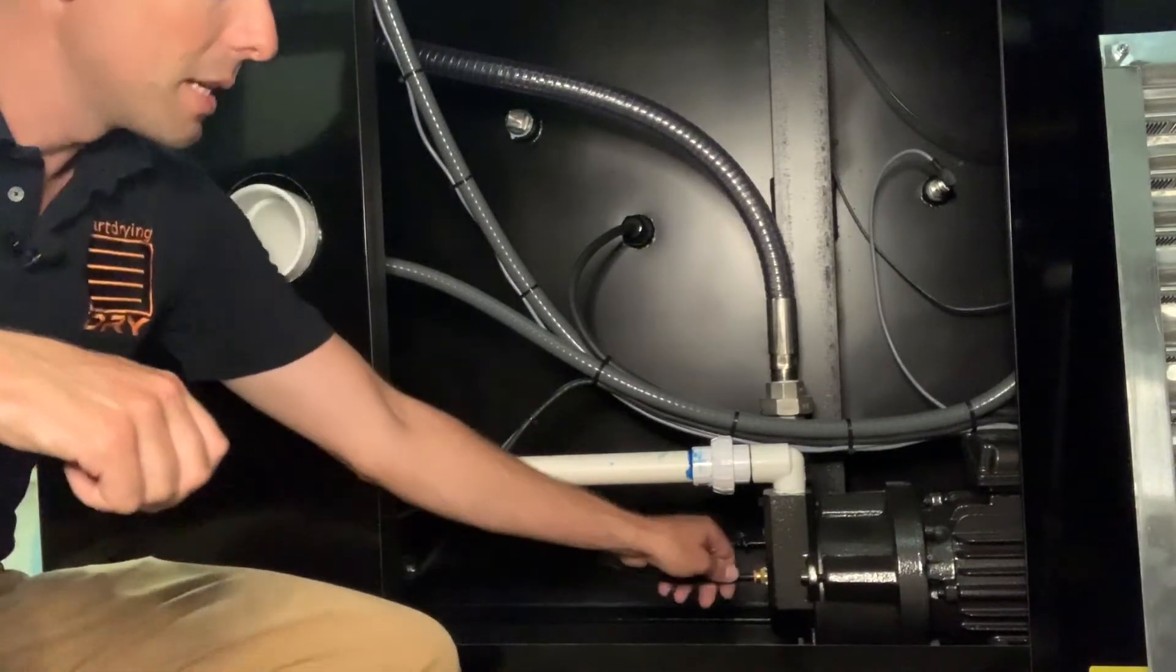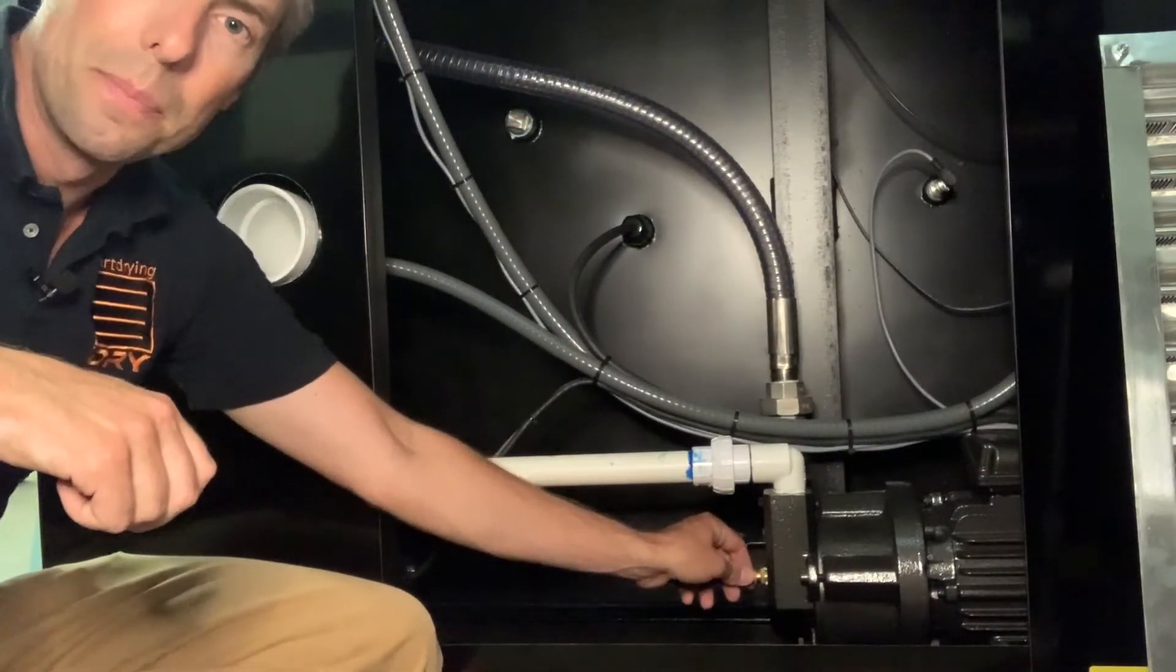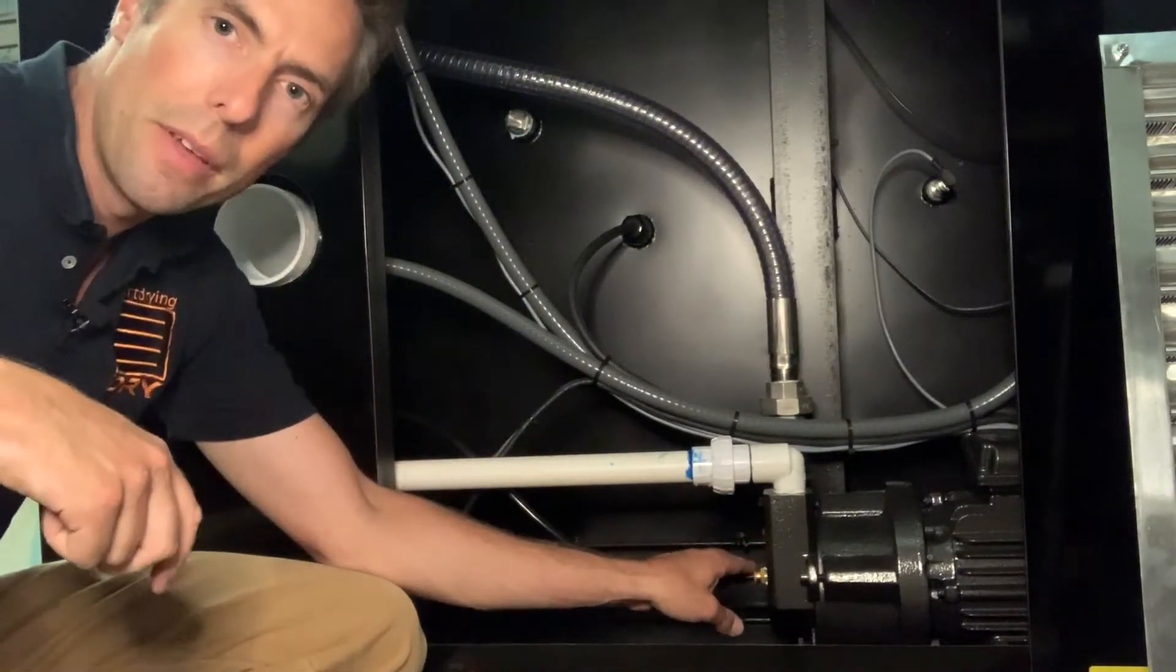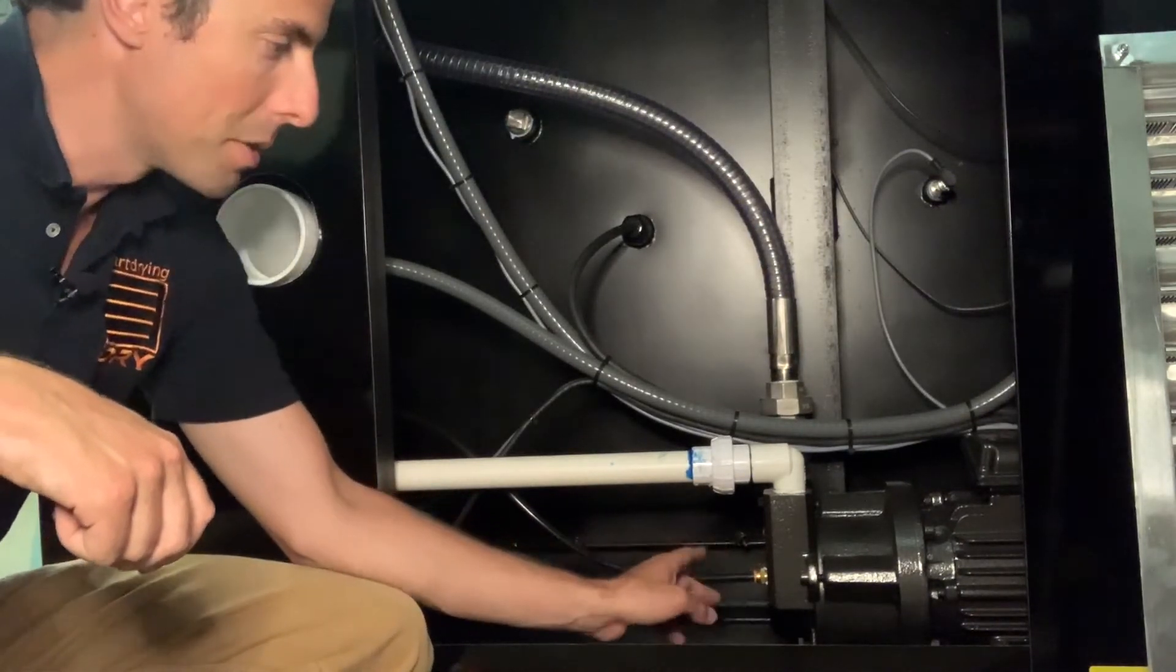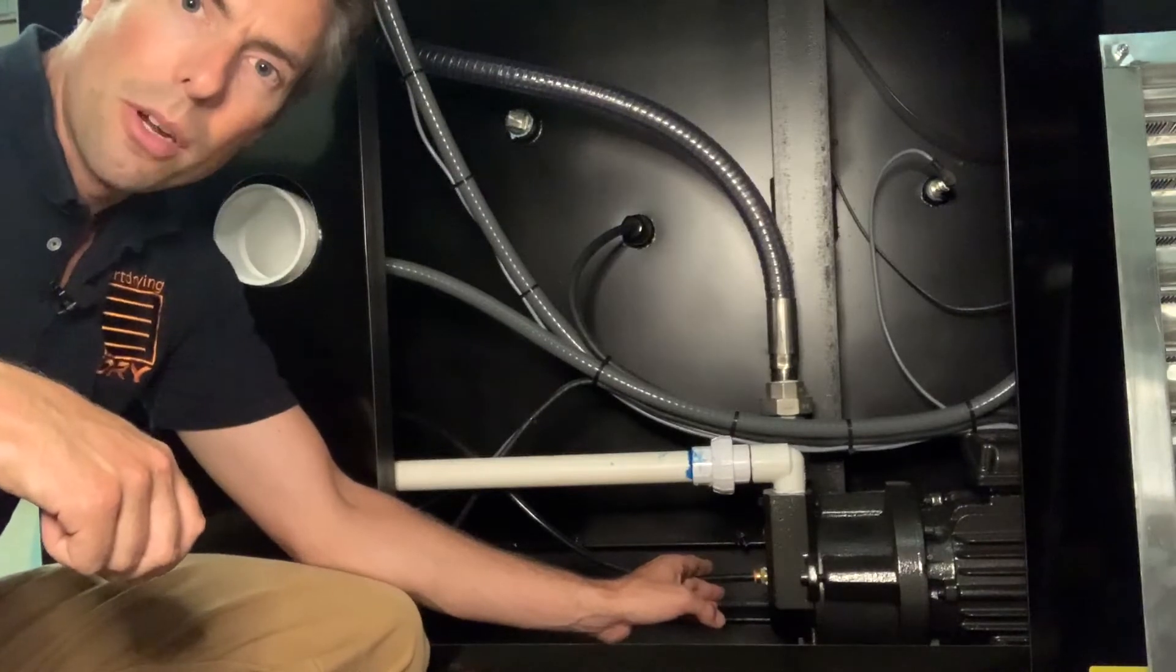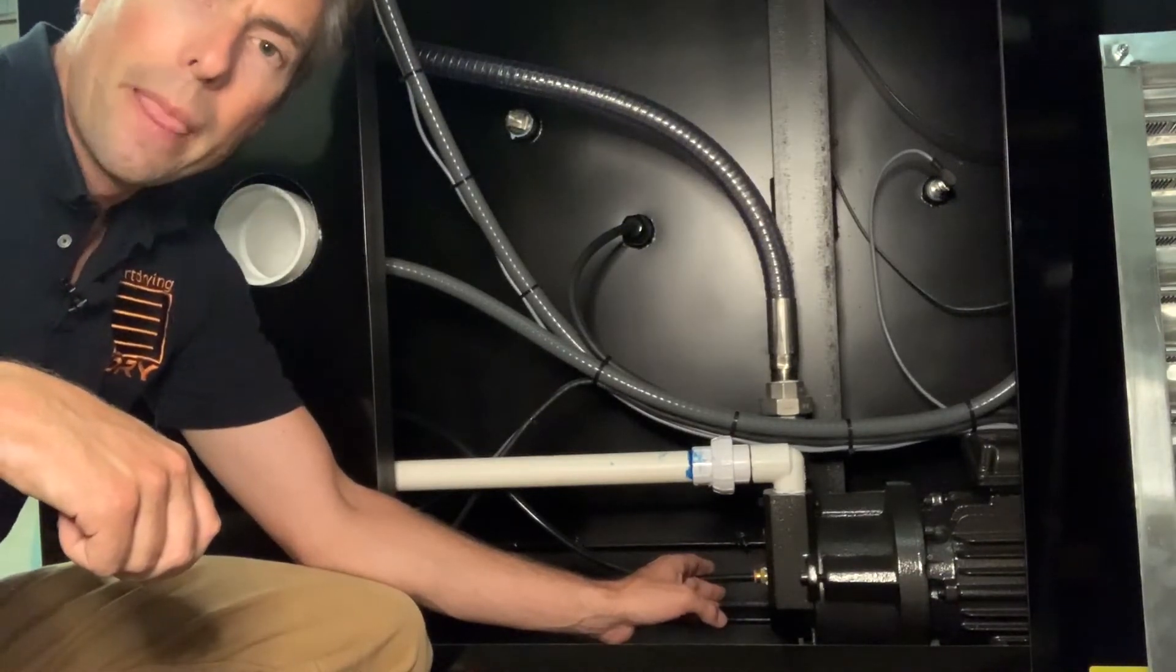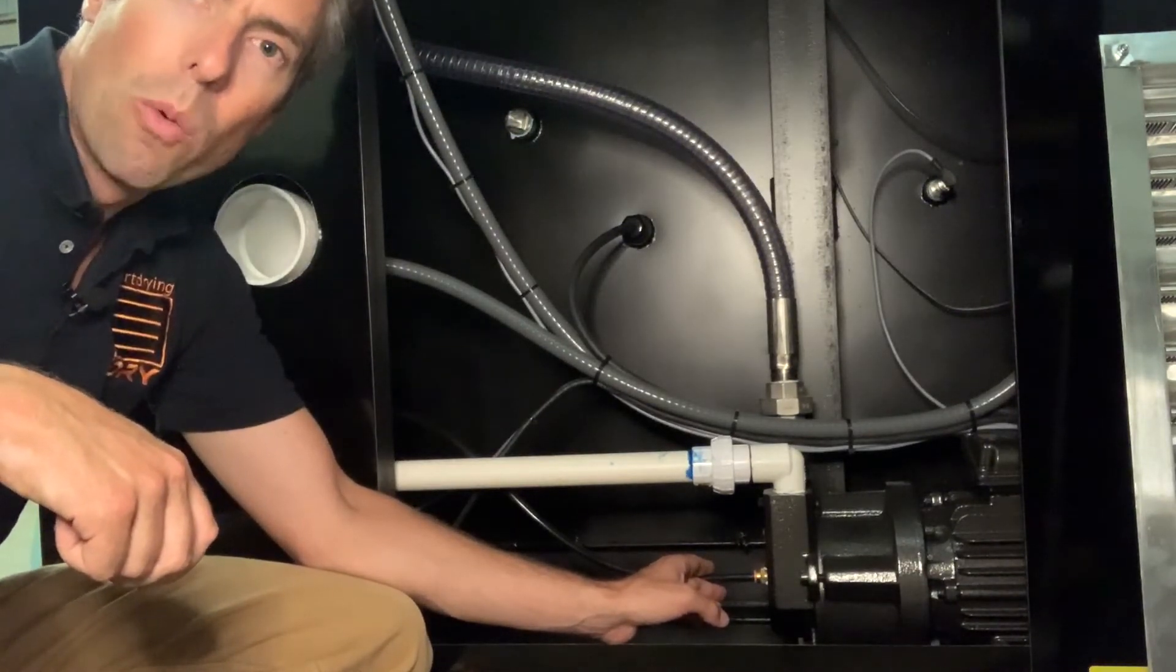We have into that pump one water line. That half inch NPT water connection runs to here through a flow sensor and temperature sensor and a solenoid to control that water on and off.